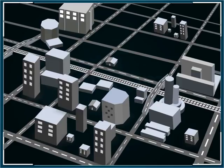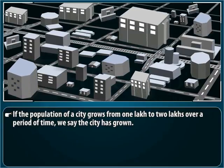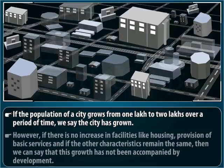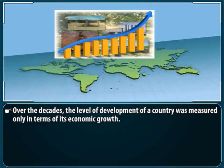Here is an example to explain the concept better. If the population of a city grows from 1 lakh to 2 lakhs over a period of time, we say the city has grown. However, if there is no increase in facilities like housing, provision of basic services, and if the other characteristics remain the same, then we can say that this growth has not been accompanied by development.